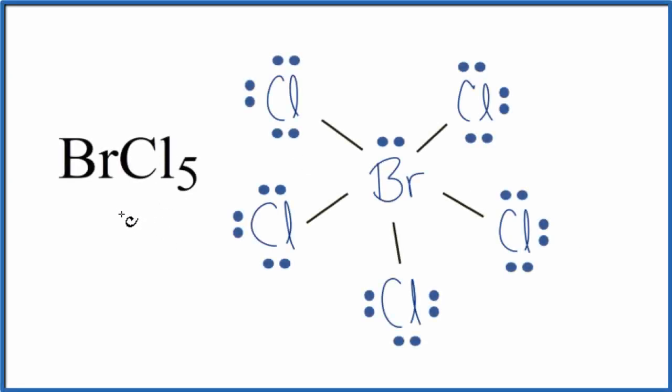In this video, we'll look at the molecular geometry for BrCl5, bromine pentachloride. As we look at the Lewis structure here, we note that the central bromine atom has two, four, six, eight, ten, twelve valence electrons.